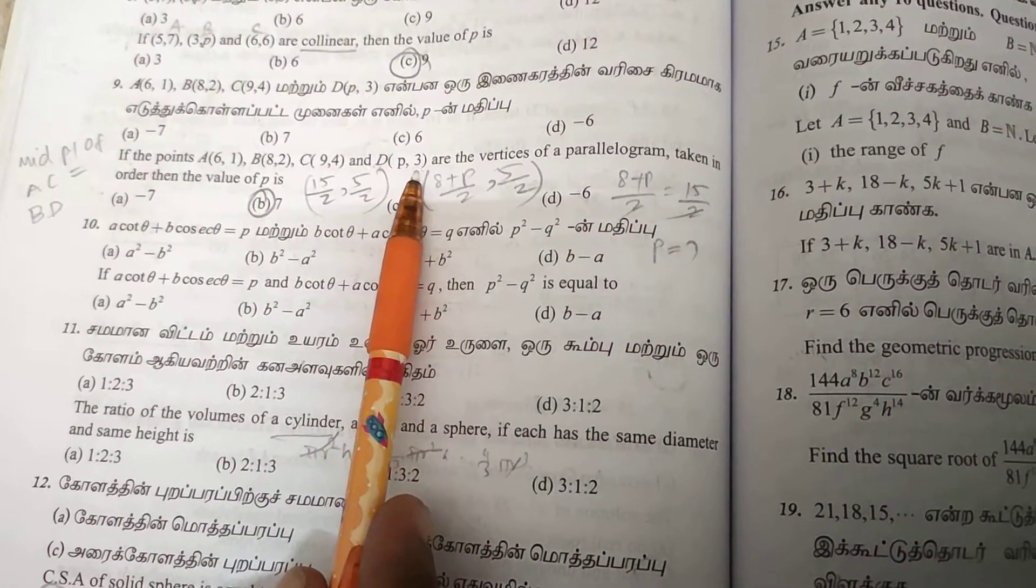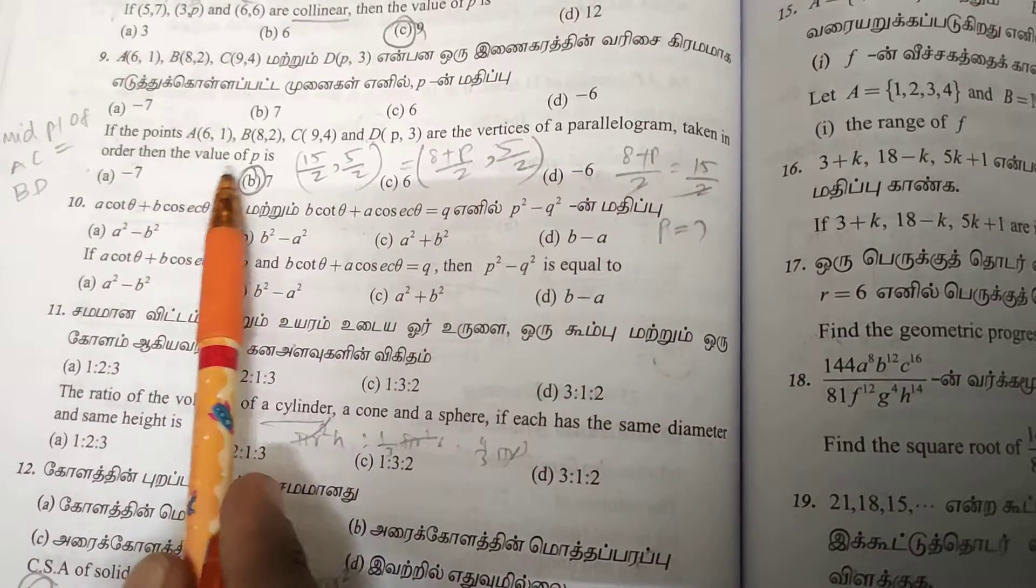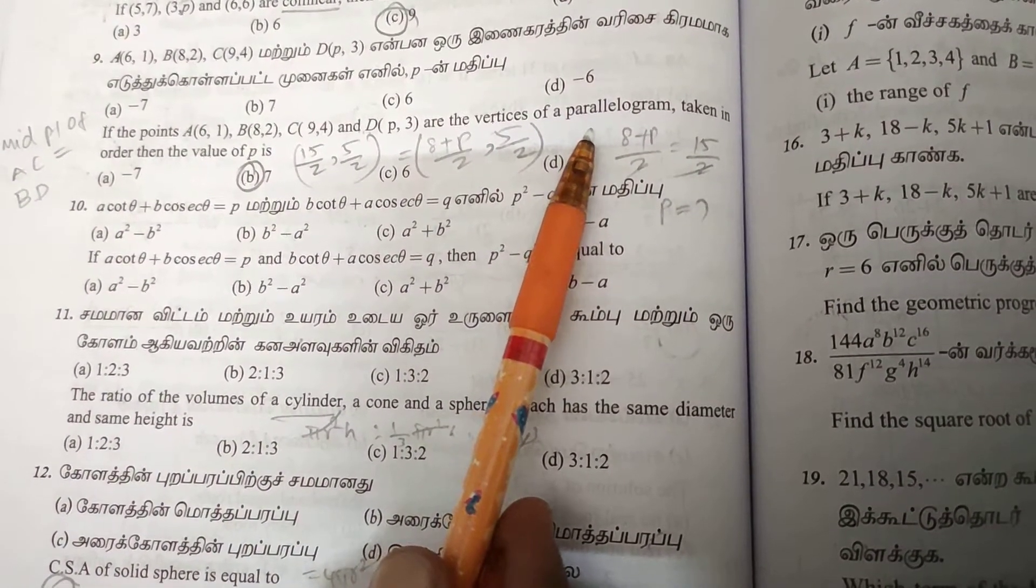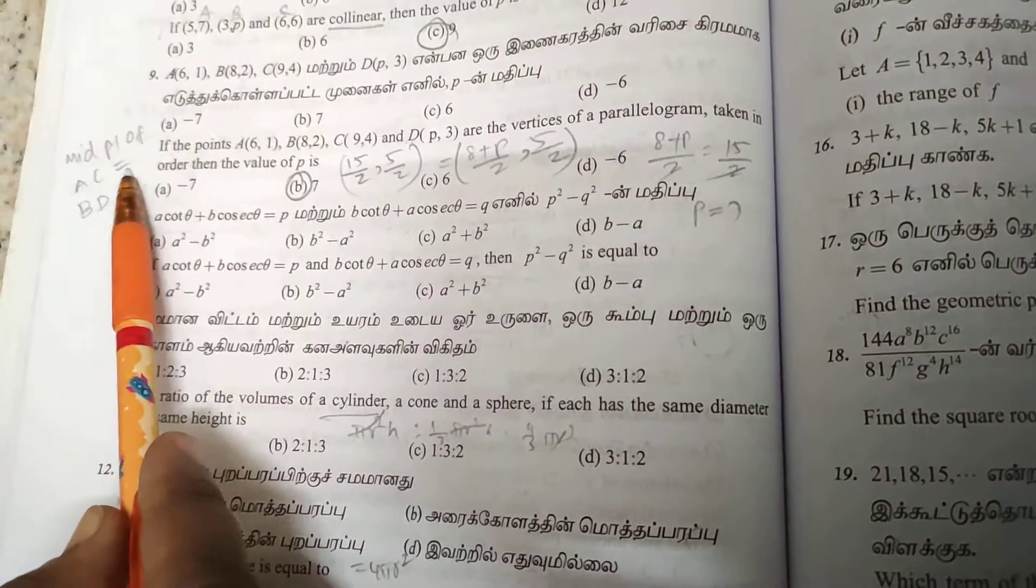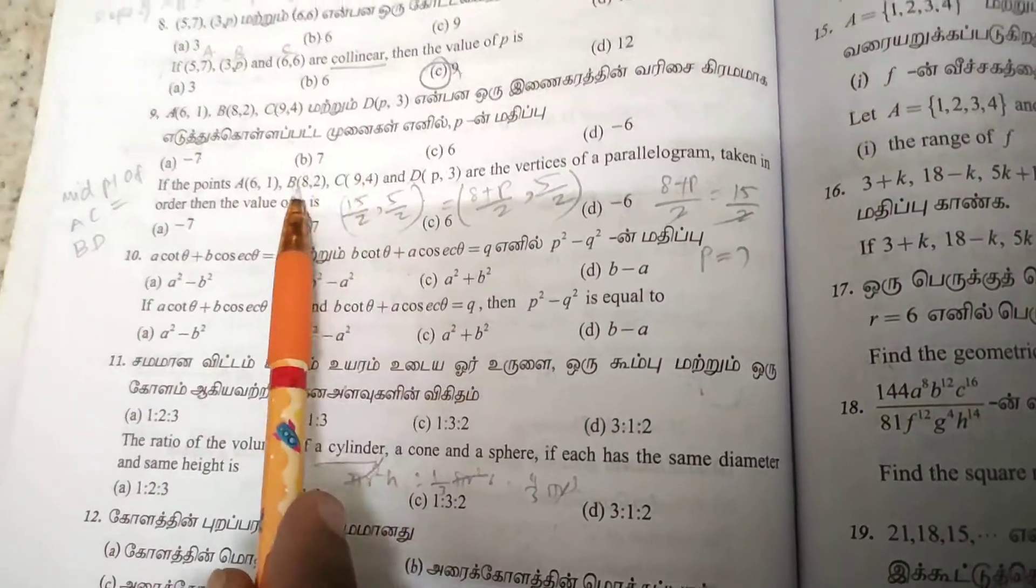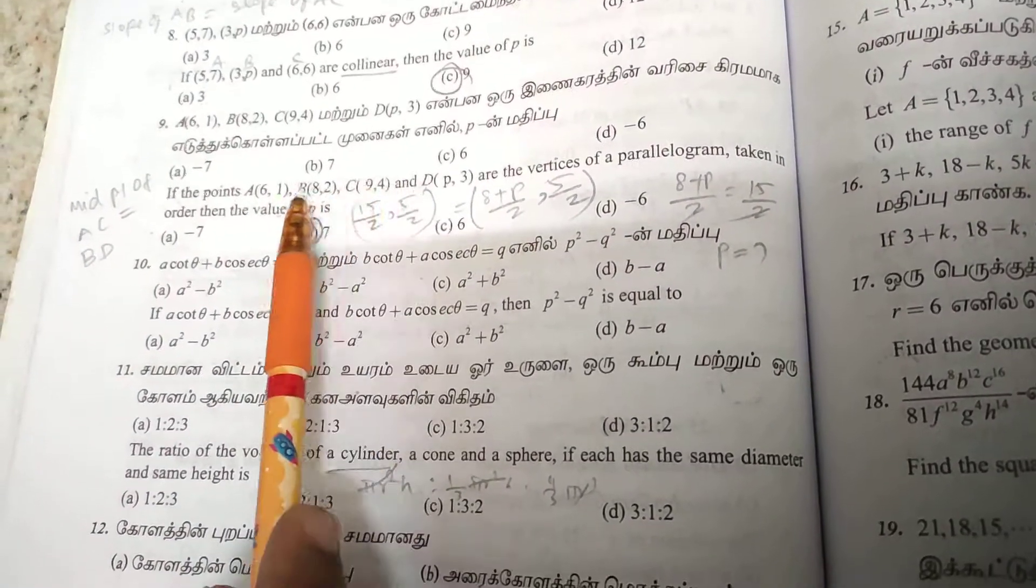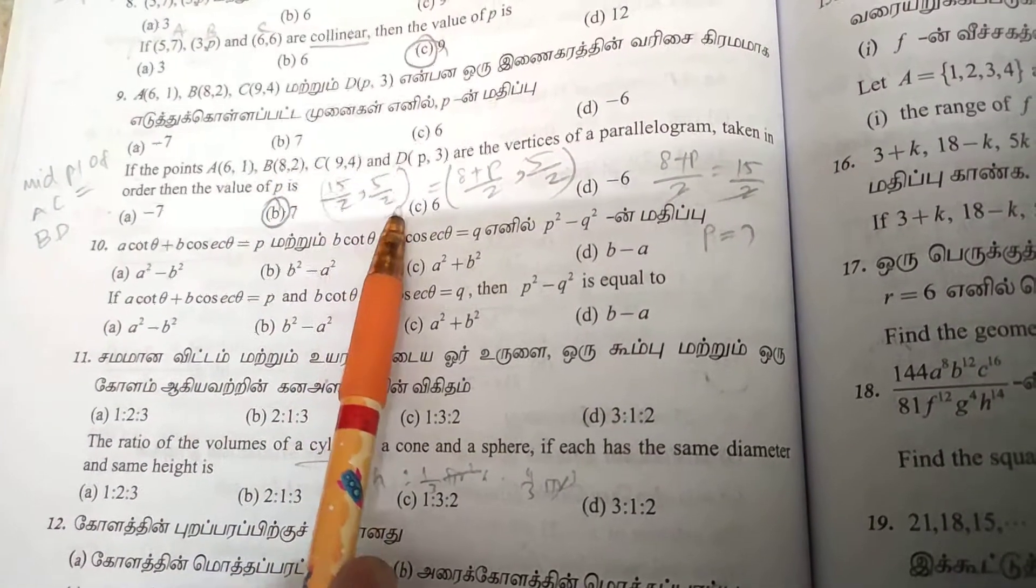Ninth one: four points are vertices of a parallelogram taken in order to get P value. In a parallelogram, diagonals bisect each other. So midpoint of AC equals midpoint of BD. For midpoint of AC: (6+9)/2 equals 15/2, and (1+4)/2 equals 5/2.